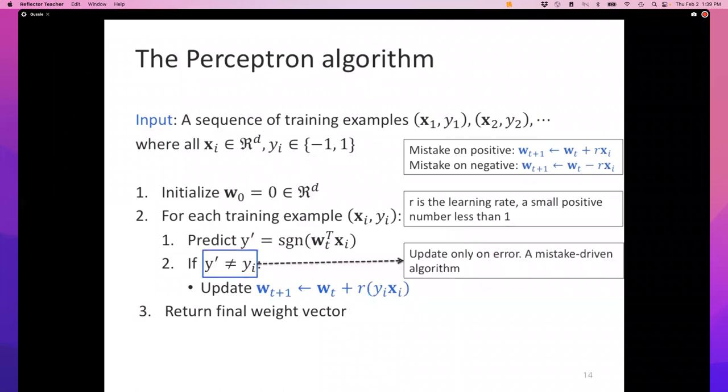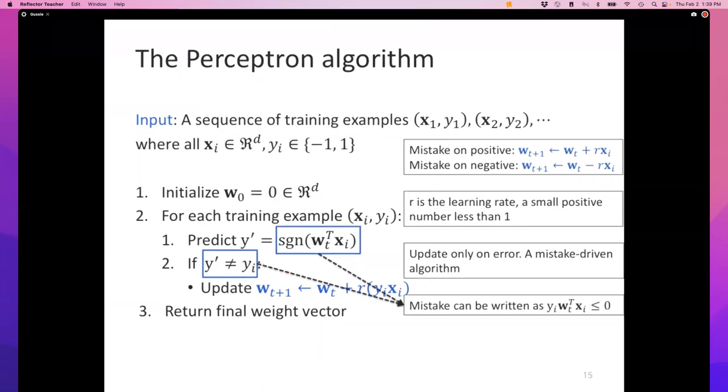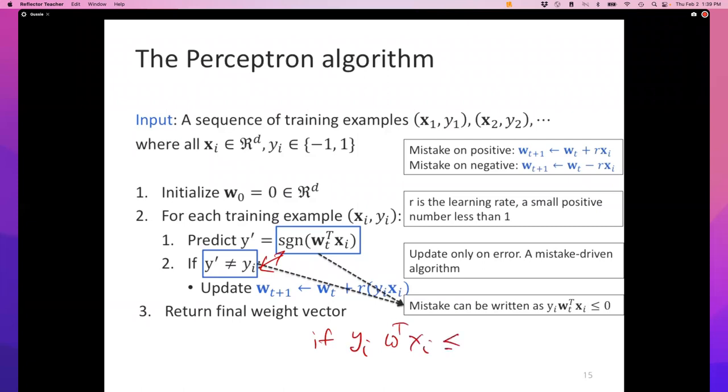This is a mistake-driven algorithm, which means the weights get updated if and only if the prediction y prime is not equal to the ground truth y_i. I've written these as two separate things - first you make a prediction, then you check - but these two steps can be combined by saying if y_i times w transpose x_i is less than or equal to 0. Can someone tell me why this one step is the same as these two steps?